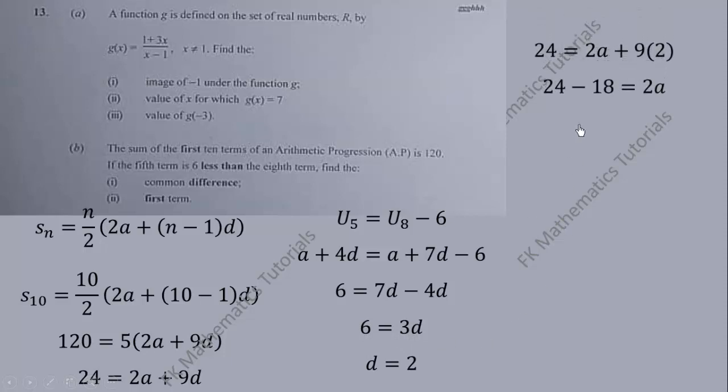We can calculate a by substituting d = 2 into the first equation. That will give us 24 = 2a + 18, so a = 3. The common difference is 2 and the first term is 3.